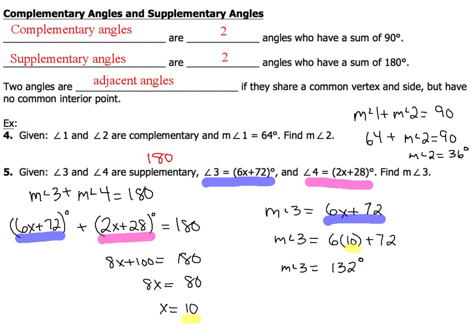Now, the first thing we'll do is write down the expression for measure of angle 3, 6x plus 72. The second thing we'll do is substitute the value that we got for x, which in this case was 10. So we'll have the expression 6x plus 72.